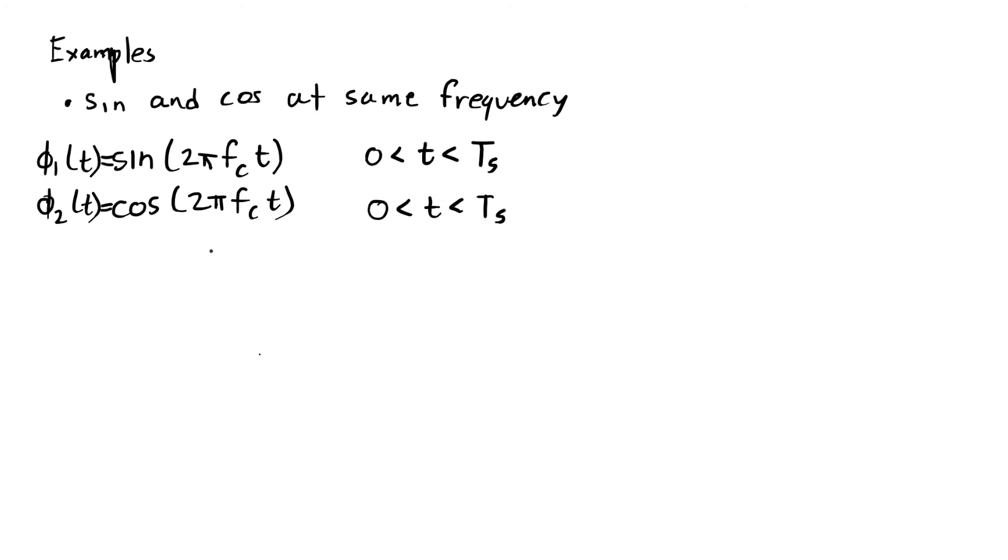Let me present two other examples of pairs of signals that are orthogonal. Consider a sinusoid and a cosine at the same frequency. Here, the FC is a carrier frequency. In wireless channels, this is wherever your signal sits in the spectrum. It might be 2.4 GHz for Wi-Fi. It might be 1.7 GHz for cellular. It might be 100 MHz for FM radio. TS becomes the symbol period. How long you're going to let this signal last. Or how often you're going to send different signals. So that's one example.